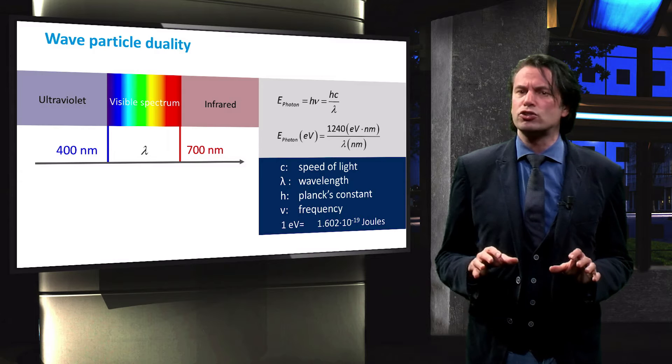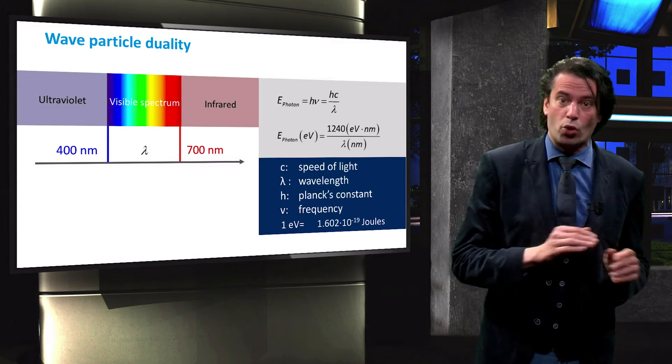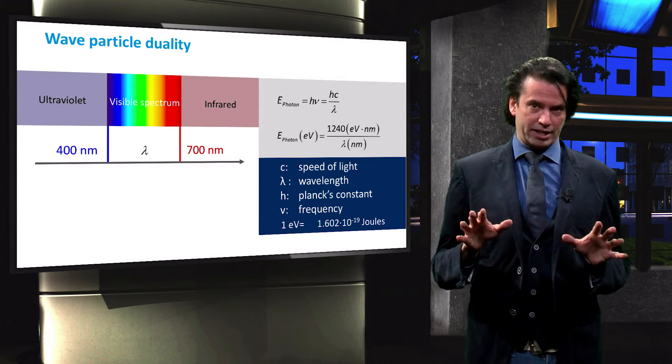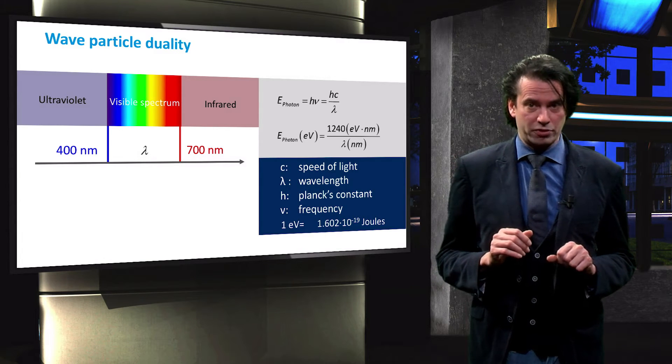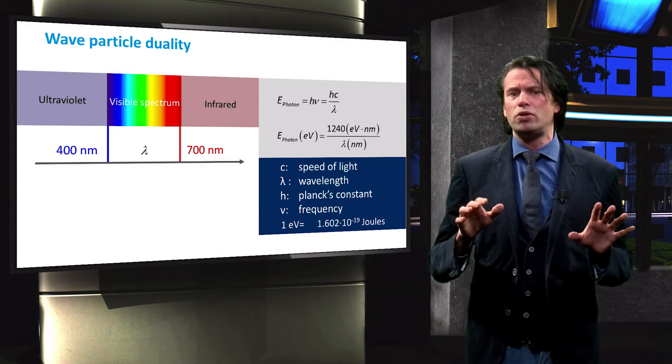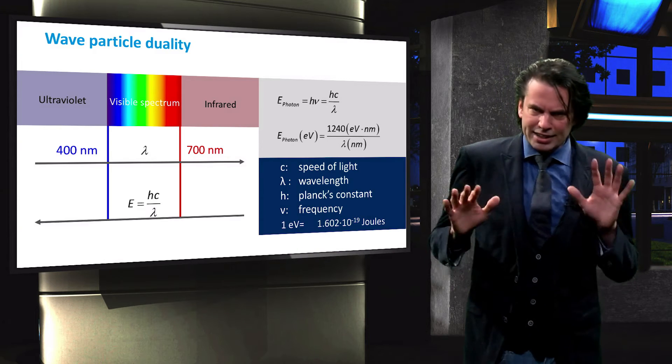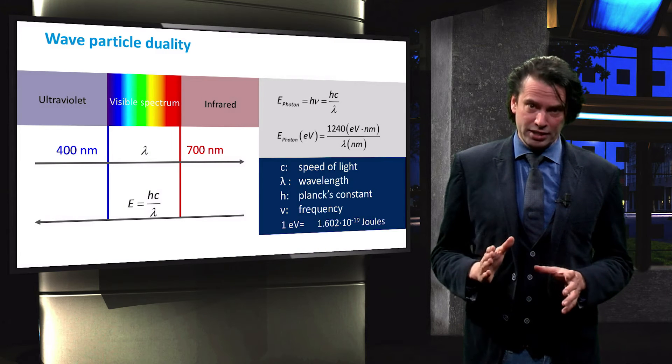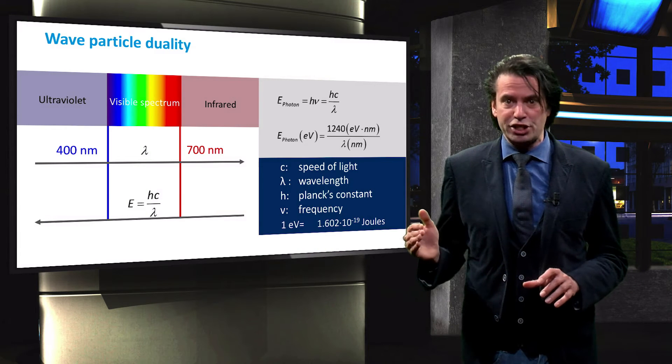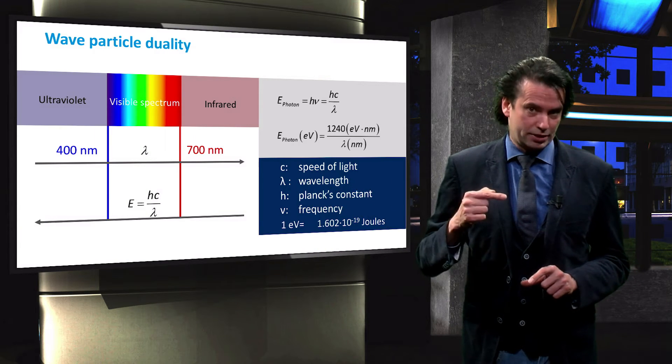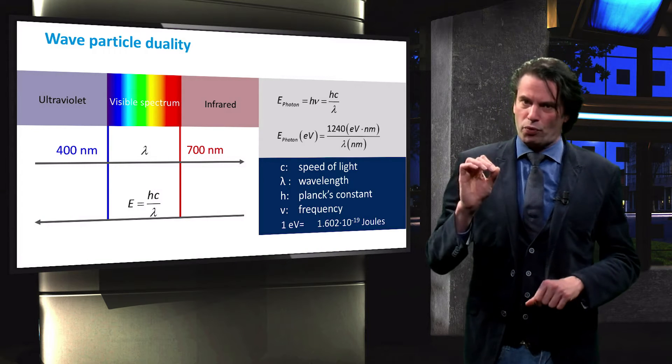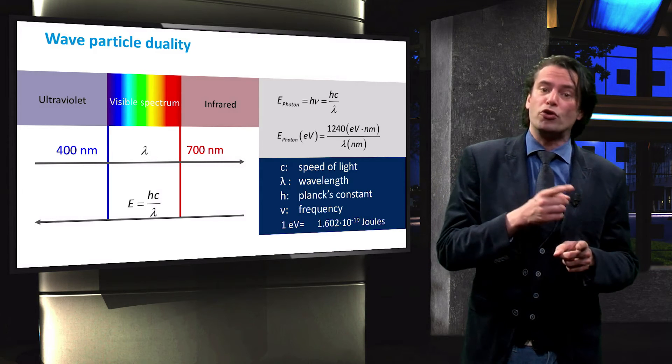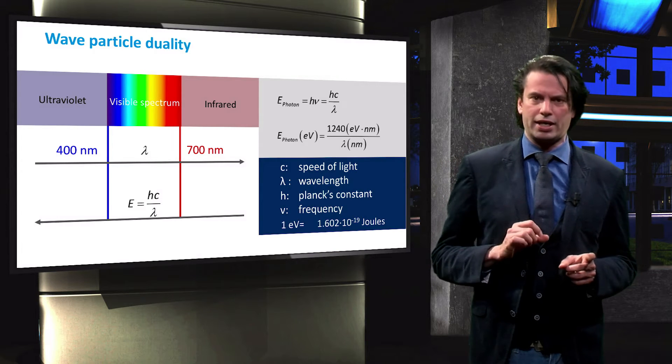Photons with wavelengths smaller than 400 nanometers or greater than 700 nanometers are in the ultraviolet and infrared spectrum respectively, and are invisible to the naked eye. Since the photon energy and wavelength are inversely related, the arrow of the energy is pointed in the opposite direction. This means that red photons have a greater wavelength than blue photons, but are less energetic.